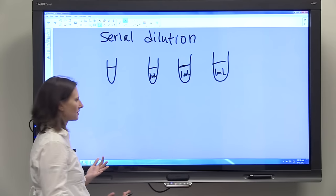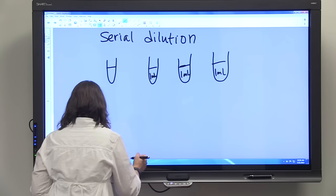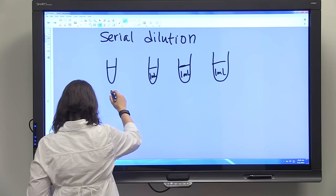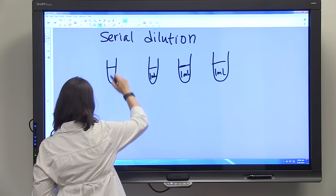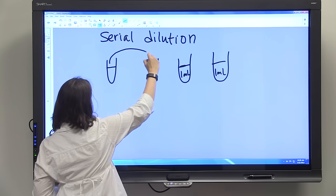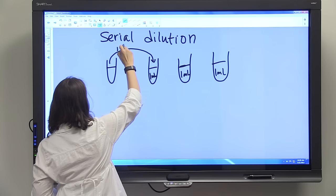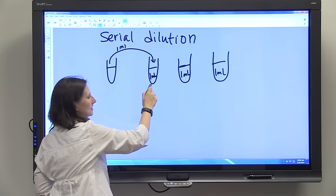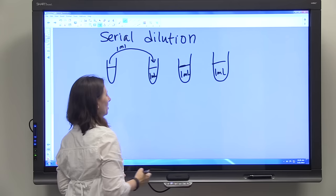So I'm going to give you two examples of serial dilutions. So if we start with 1 ml being transferred to this test tube which already has 1 ml in it,